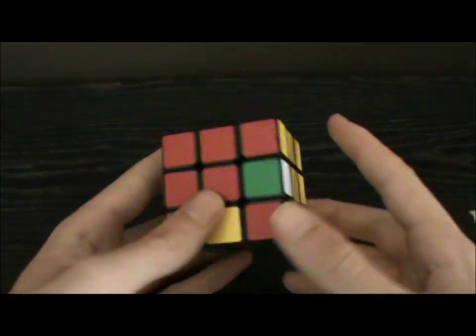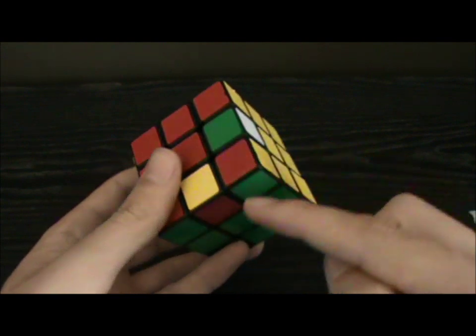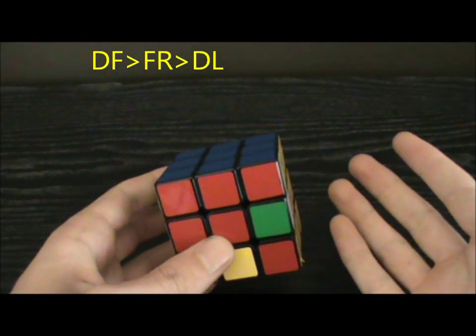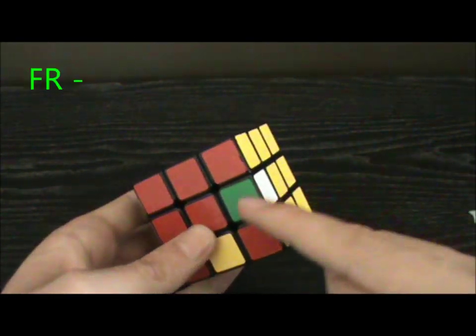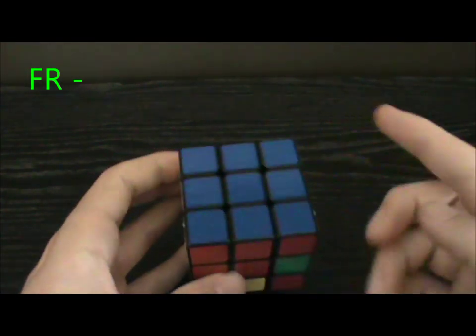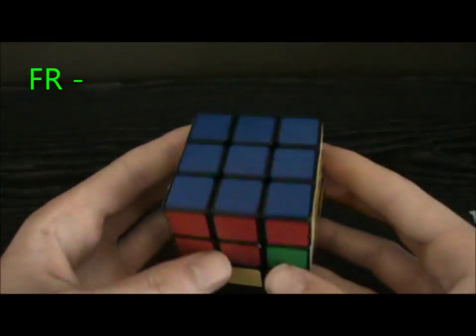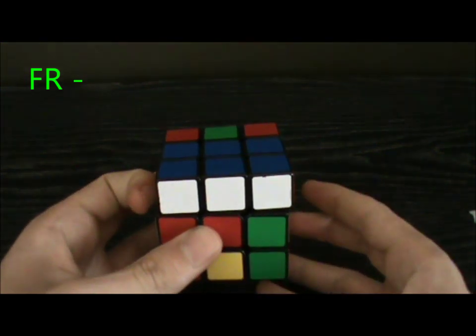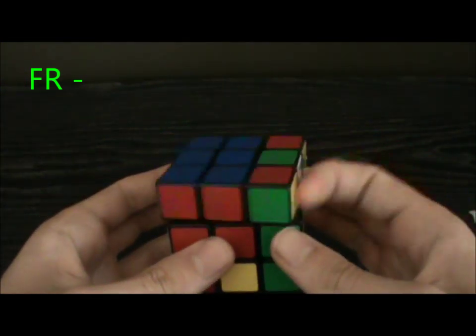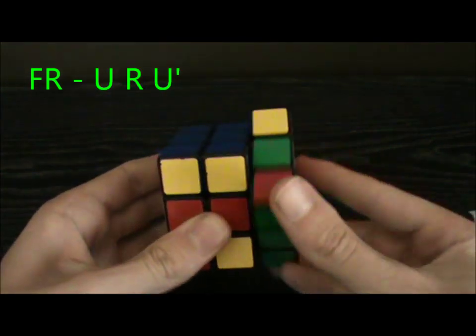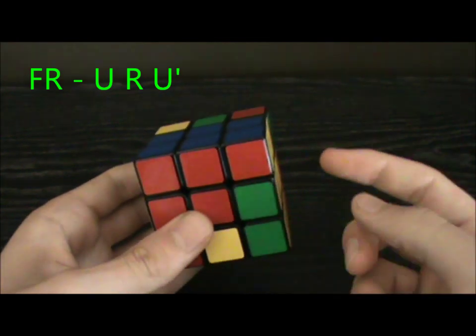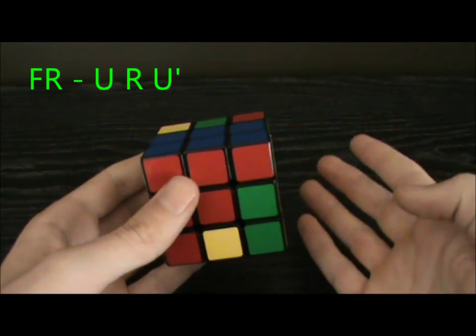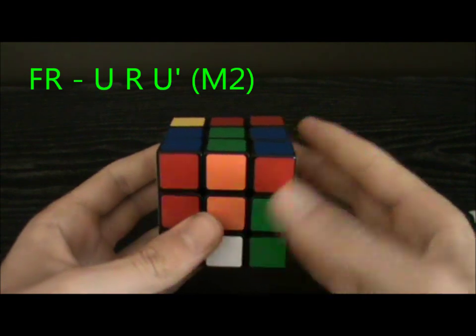We'll start off by solving these edges with M2. So the cycle is DF to FR to DL. The first thing you want to do is find a way to bring the first target, FR, to UB, without disrupting any other pieces in the M slice. So that means you can't just go R U' because you disrupted UF. But you can do U R U'. So that brought FR to UB, and everything else in the M slice is unchanged. That's the setup. Now we can do M2 and undo the setup.